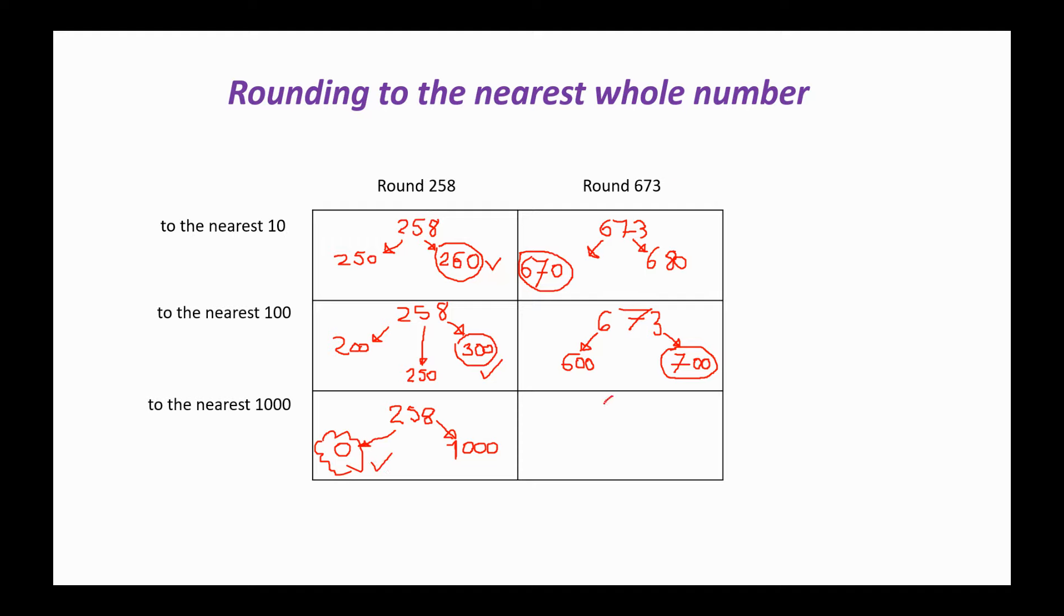And 673 to the nearest 1,000. I'll try and draw that a bit better. 673 to the nearest 1,000. Well, again, the nearest 1,000 below that is 0, and the nearest 1,000 above that is 1,000. And this time 673 is closer to 1,000, so this one will be our answer. Thanks.